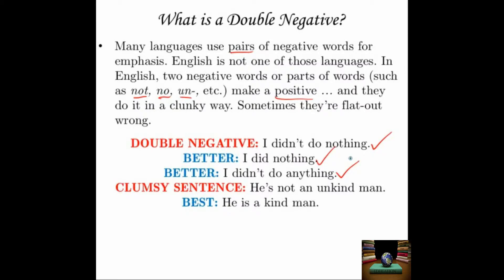Similarly, it's clumsy — and a double negative — to say 'he's not an unkind man.' Well, that implies that he is a kind man, but it's better to come out and just say 'he is a kind man.' Much better.